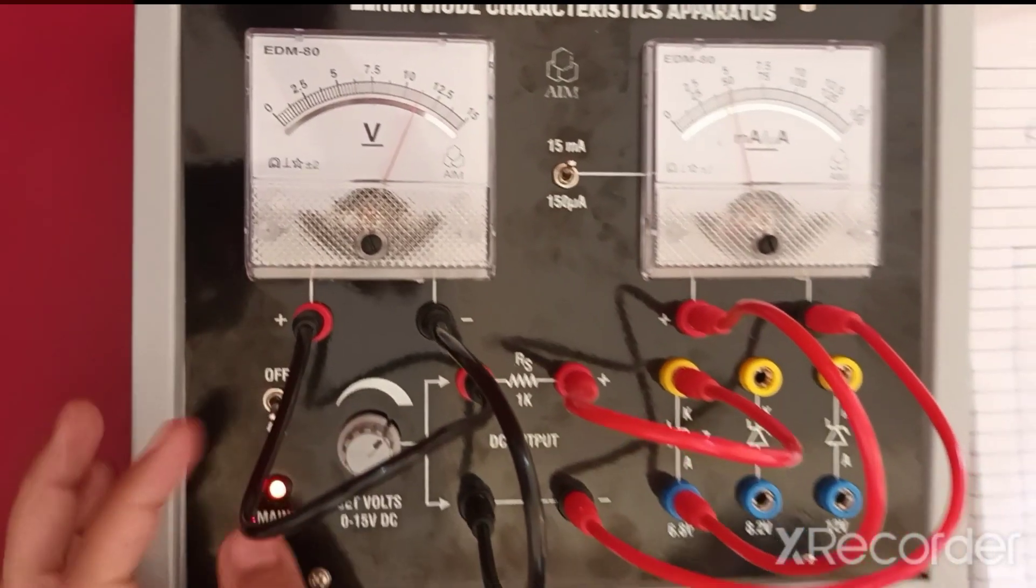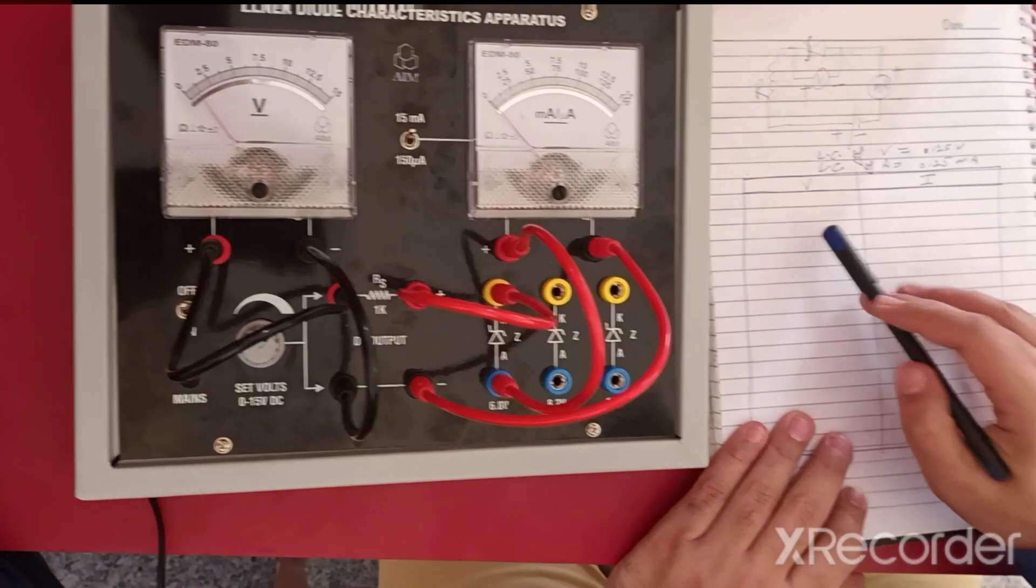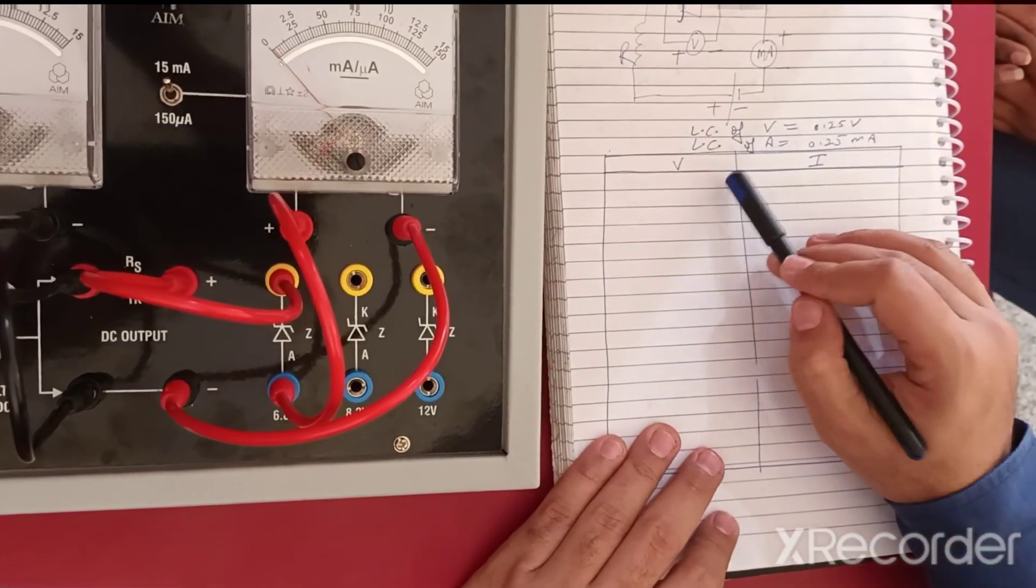Now, we note down the readings in the table. Before noting it down, we have to calculate the least count of the voltmeter and ammeter.